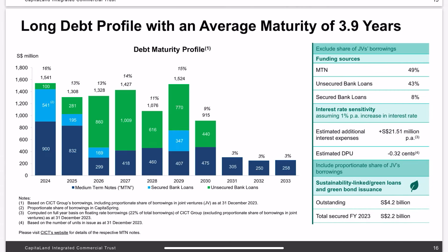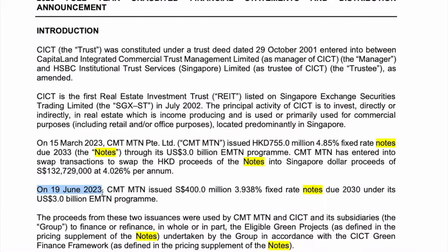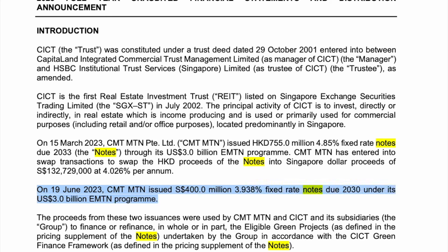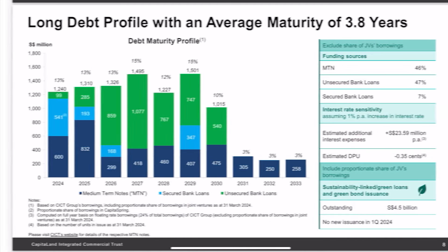However, their debt maturity profile shows a decent amount of debt requiring refinancing over the next few years. One way to estimate future interest rates is to look at their recent term loans — based on the full-year financial statement, they have issued notes at 3.938 percent. This means there's a chance their average cost of debt of 3.4 percent may continue to rise. Looking at their Q1 results, they renewed S$300 million of medium-term loans in 2024, and cost of debt has already moved up by 0.1 percent to 3.5 percent. We should observe this closely over the next few quarters.